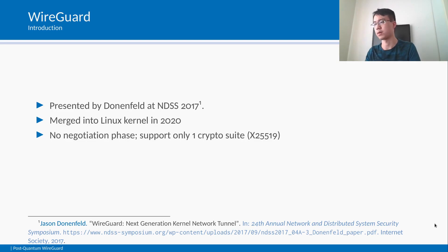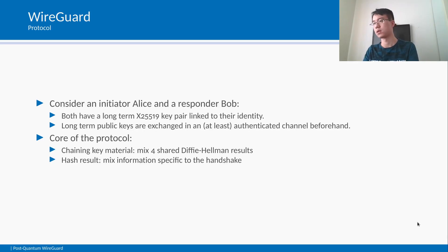The choice of modern cryptography — for example, X25519 for elliptic-curve Diffie-Hellman key exchange — achieves high performance. The WireGuard protocol considers an initiator Alice and a responder Bob. Both Alice and Bob have a long-term key pair generated with X25519. Their long-term public keys are assumed to be exchanged before any handshake takes place, in a secure and authenticating manner. This assumption is practical, considering how VPN is set up in real-world applications.